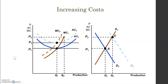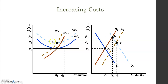Since this is an increasing cost industry, the marginal cost curve and the average cost curve shift upward. This means that as more and more companies enter the market, the cost of the factors of production increases.